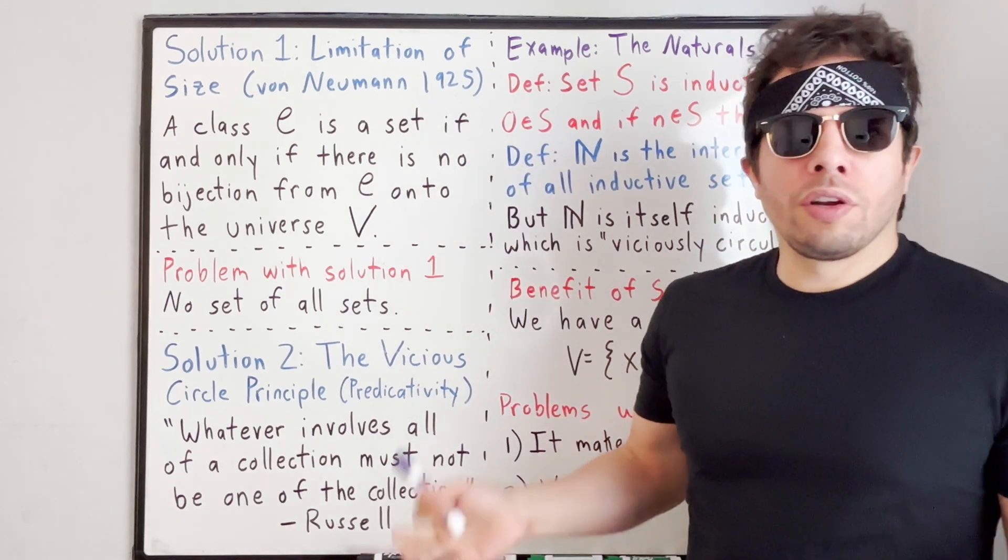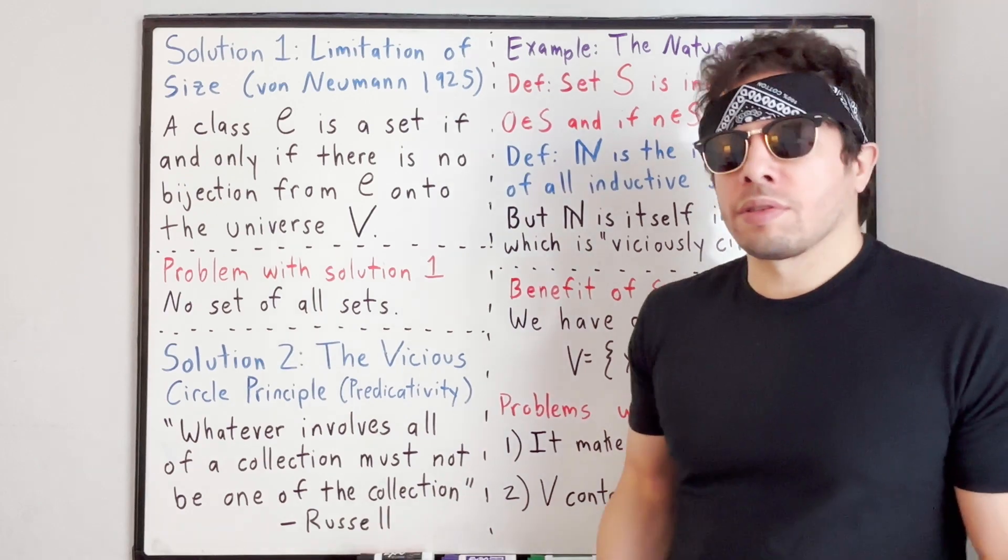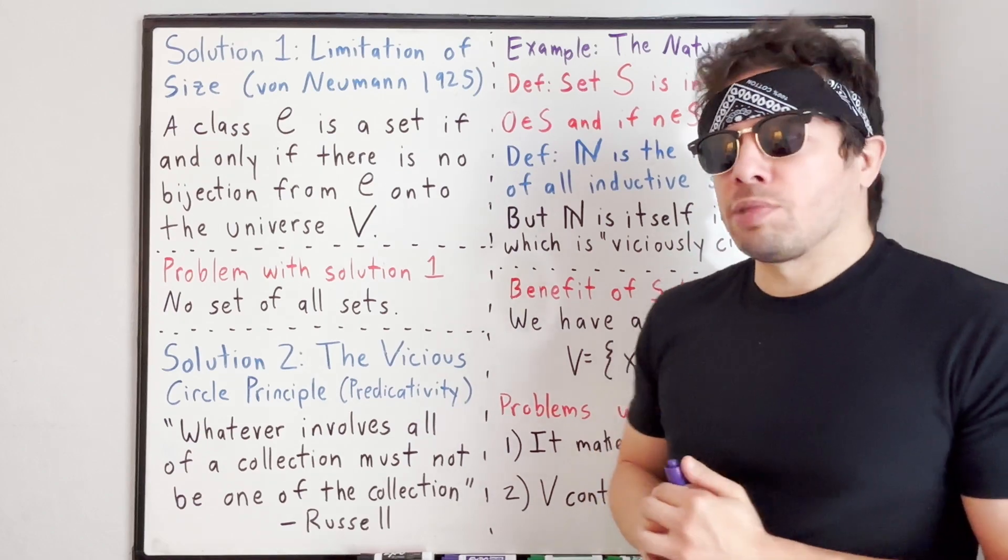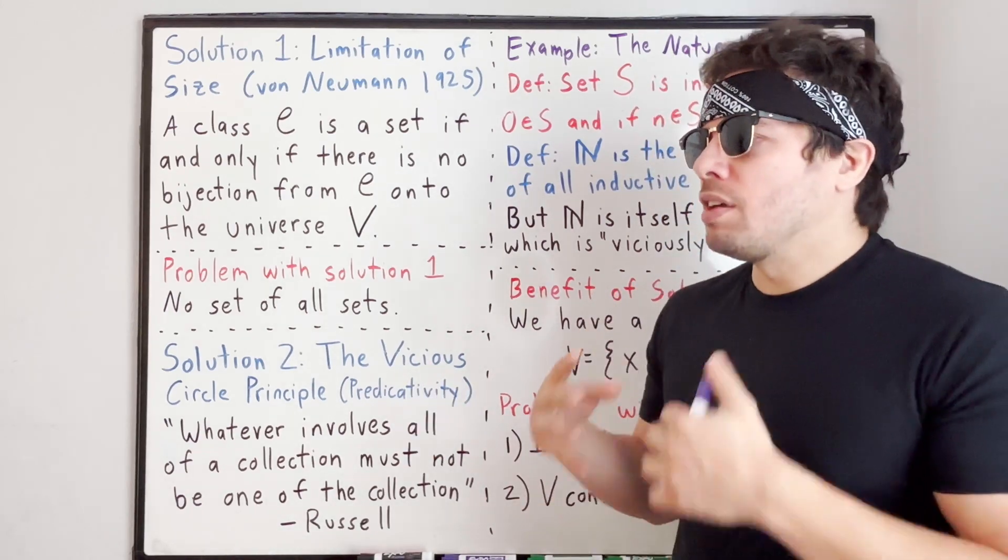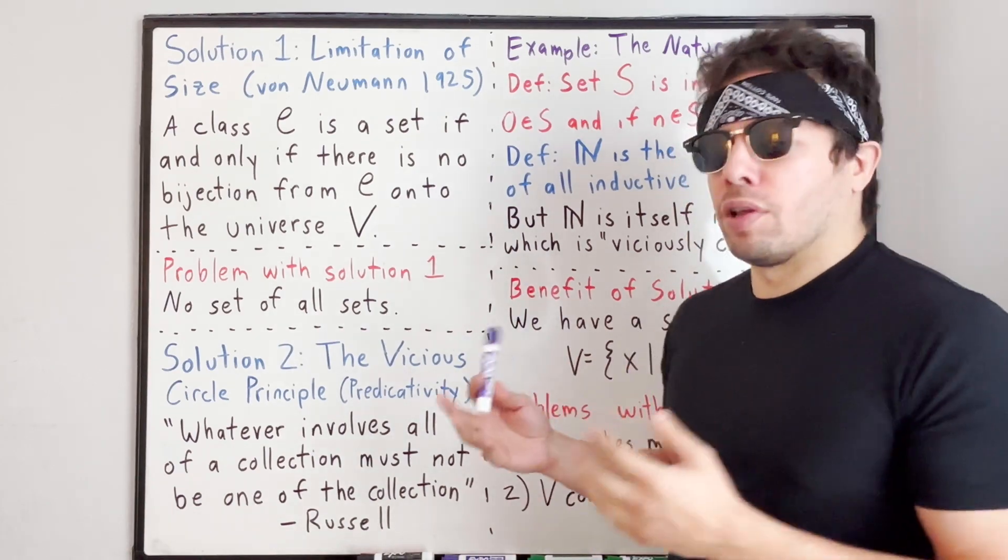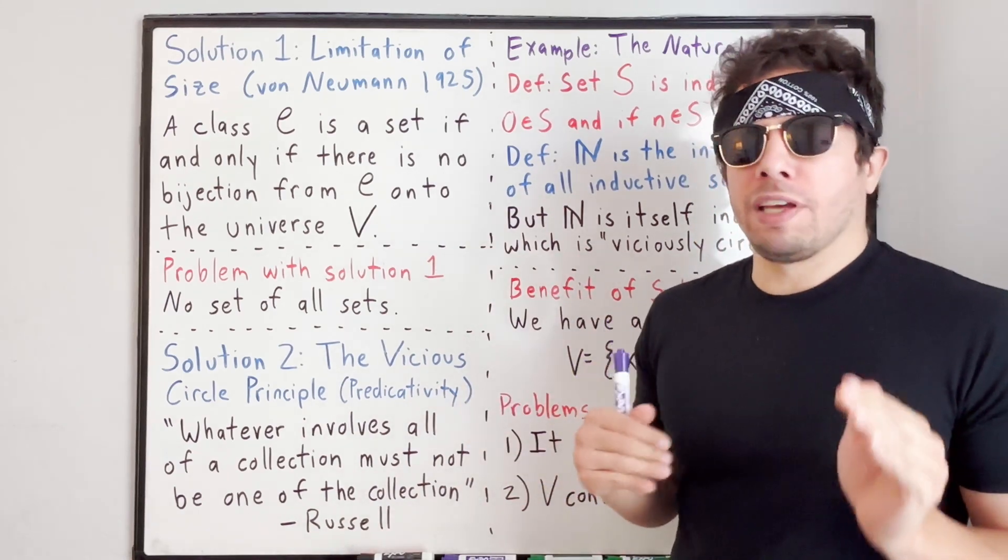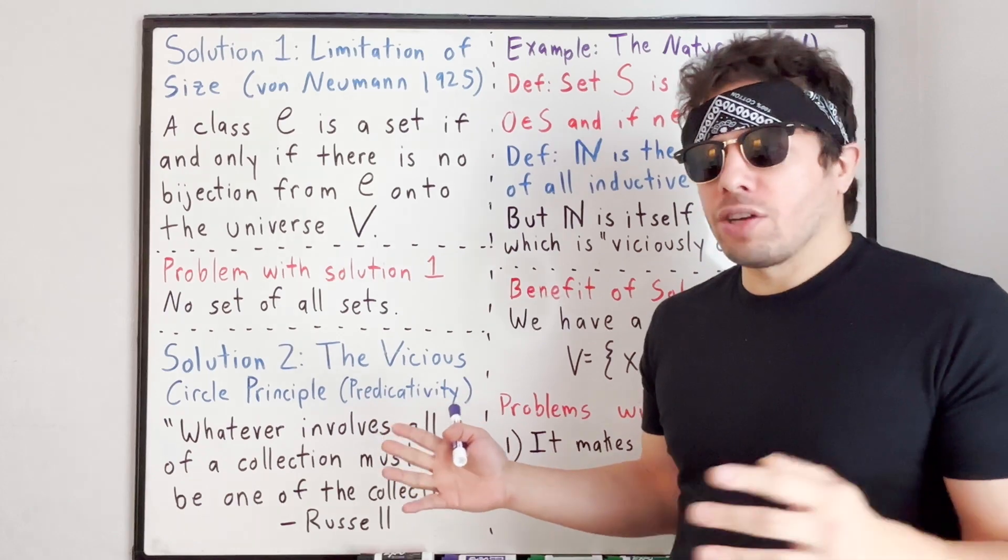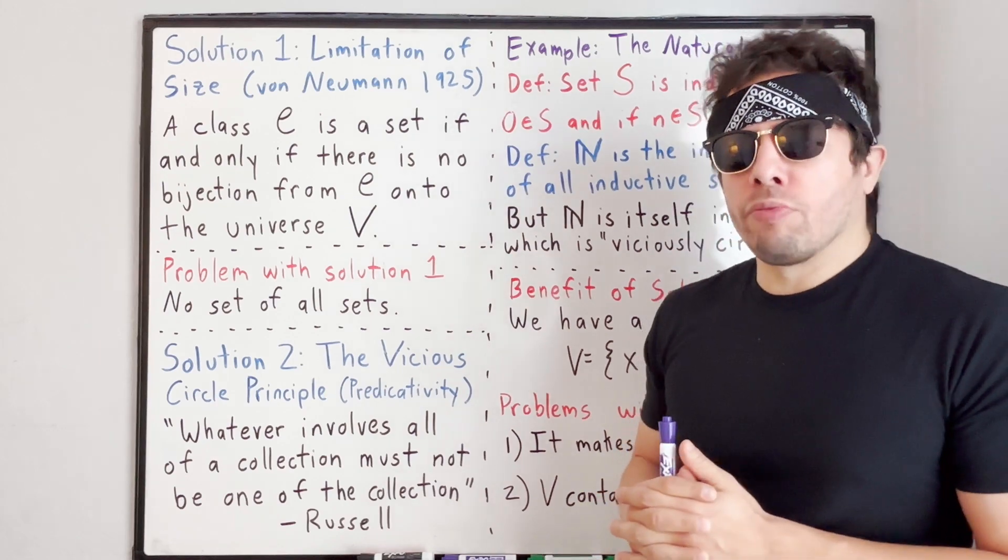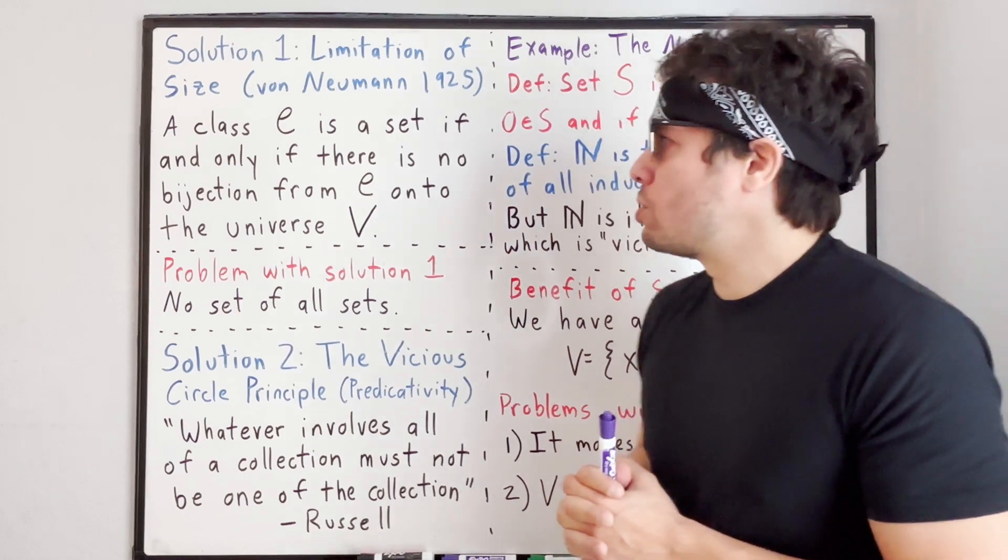From solution one arises the famous set-class distinction, where for some collections we call those sets, but for larger collections we call those classes. The limitation of size principle was an explicit axiom of the von Neumann-Gödel-Bernays system, but it also underlies the philosophy of Zermelo-Fraenkel set theory. In Zermelo-Fraenkel set theory, if you combine the axiom of replacement with the axiom of separation, this amounts to a limitation of size.